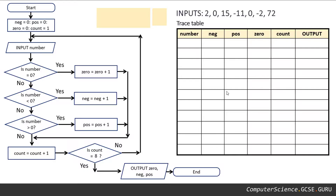The trace table is just a table, and across the top for our headings are the values that may change throughout this flowchart. So it's the name of our variables across the top and we also have space to record any outputs that we may come across as we go along or certainly at the end.